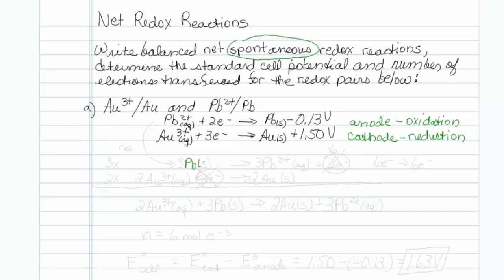So that would be lead solid — this gets reversed — going to lead two plus, plus two electrons. The cathode reaction I can leave just as is, so gold three plus, plus three electrons, goes to gold solid state.